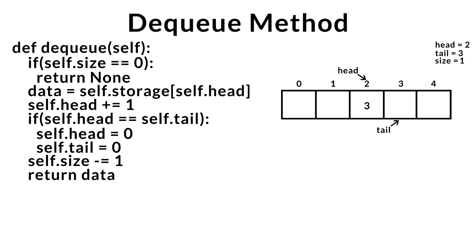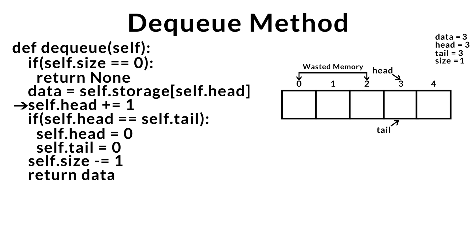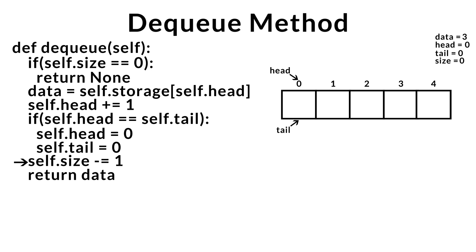For the last DQ example, we execute the DQ method once more. We check if the queue is empty — it's not — so we store the data from the front. We remove it by incrementing the head index. Now comes the key part: index 0, 1, and 2 are currently wasted memory. We check if the head and tail indices are equal — in this case, they are — so we reset both head and tail indices to 0 to save memory. We decrement the size and return the data.